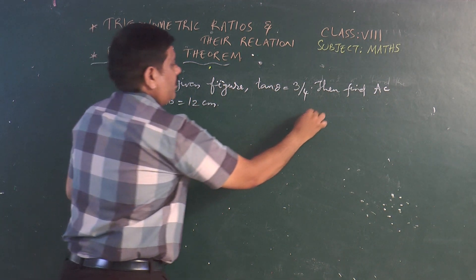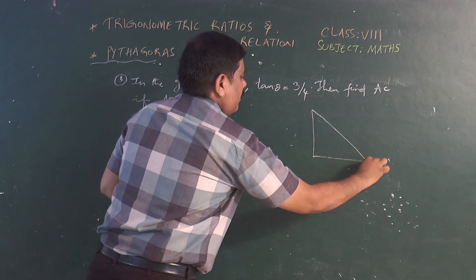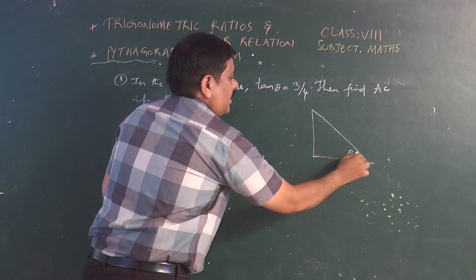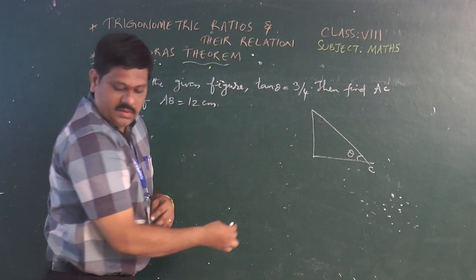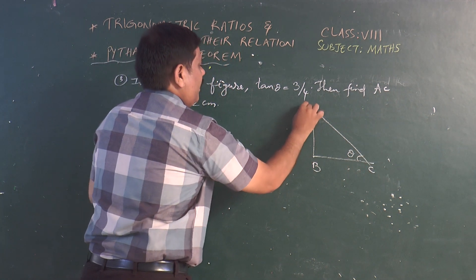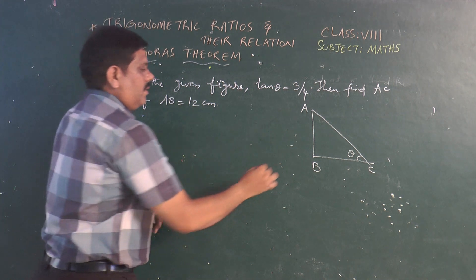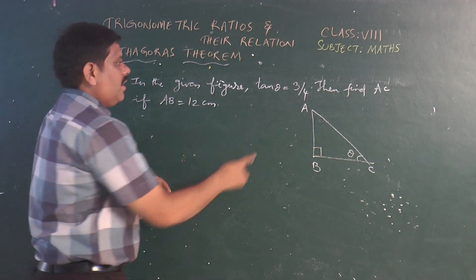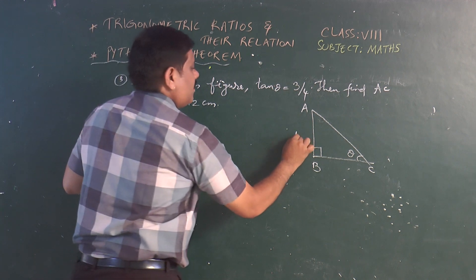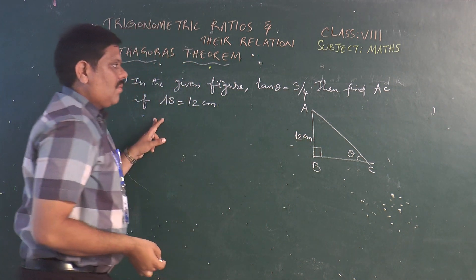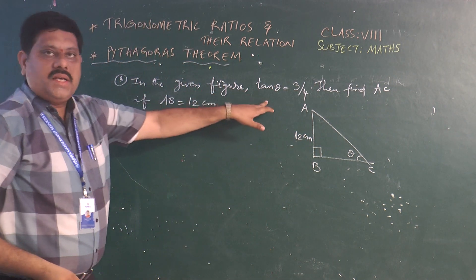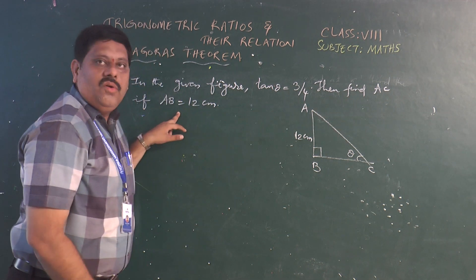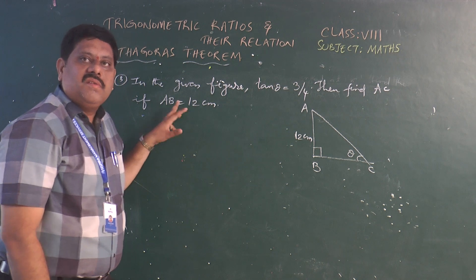In the next problem, we have a figure where there is a right angle at B and AB length is given as 12 centimeters. We are given tan θ = 3/4 and we need to find the length AC.